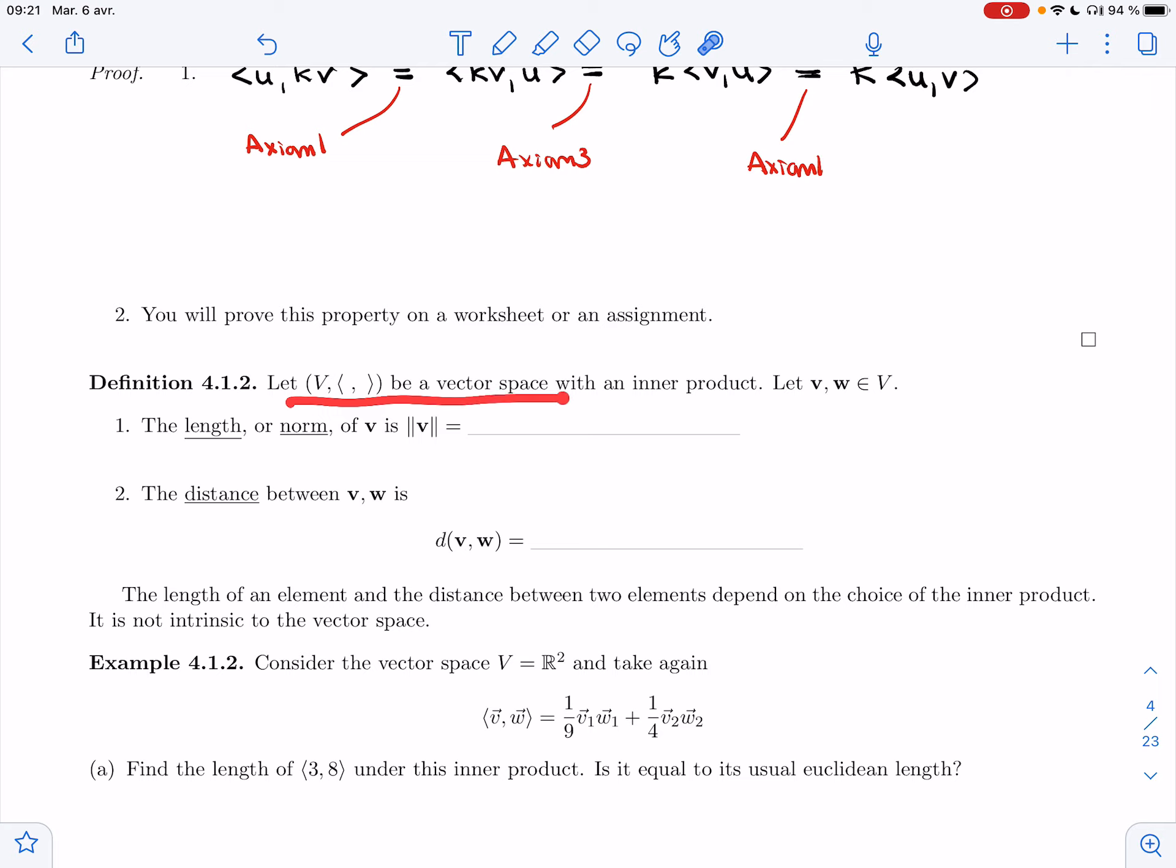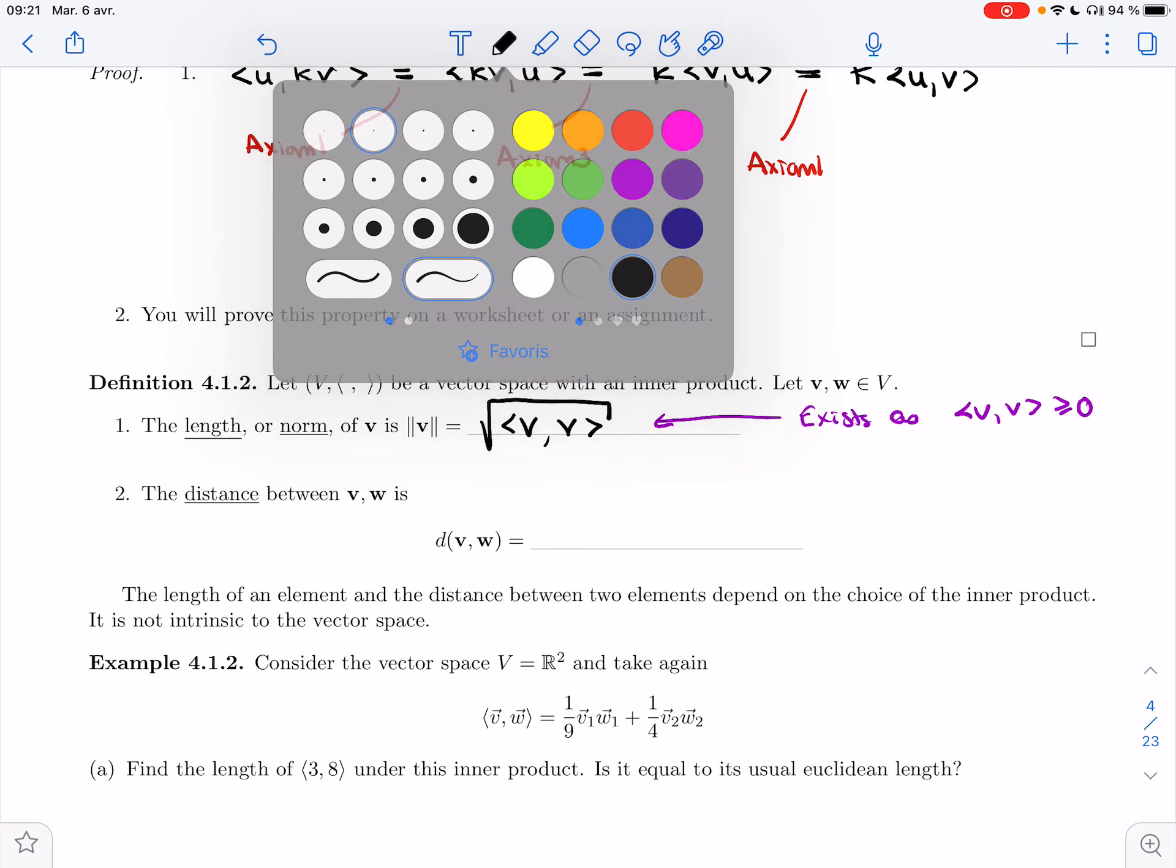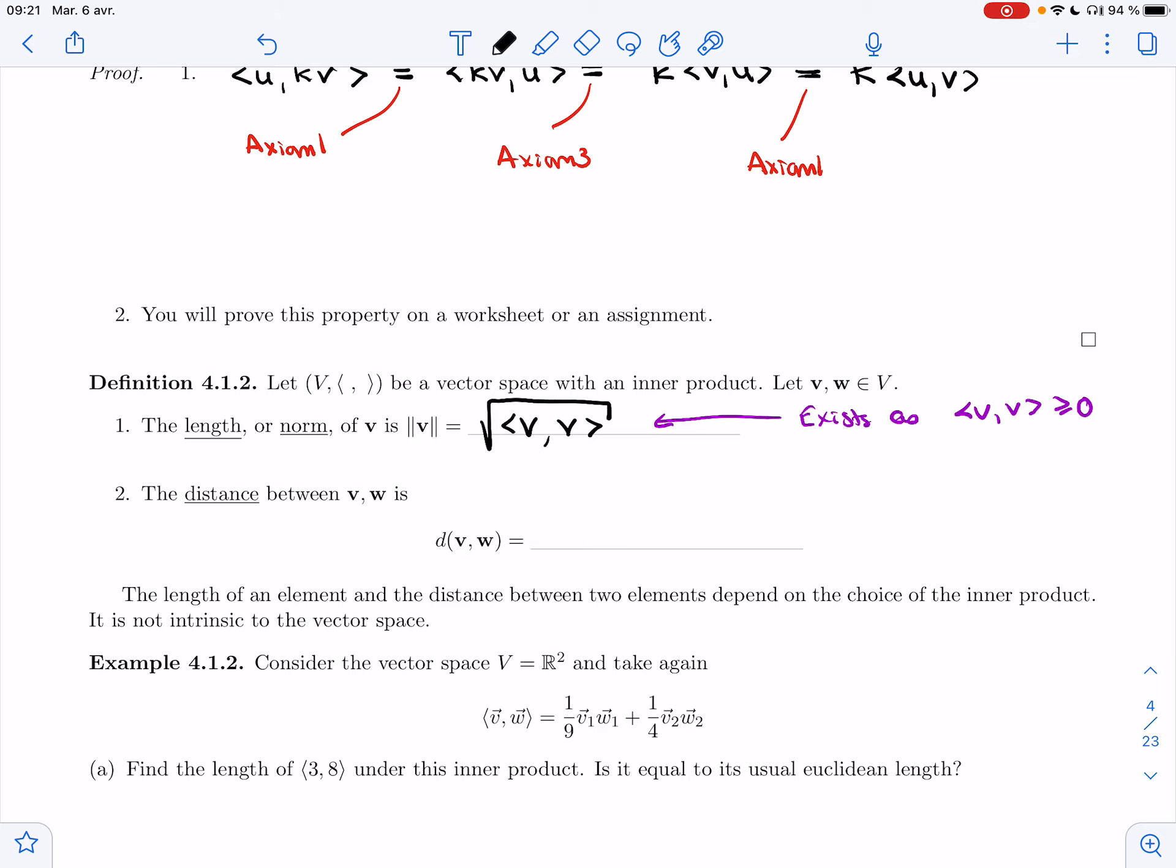So let V be a vector space with an inner product. Let v, w be in V. The length or the norm of v - we call it the magnitude as well sometimes - so I'm going to take the dot product of v with v, that's going to give me a positive number, and then I'm going to take the square root. This is part of the reason that we insisted on the dot product of v with v being positive.